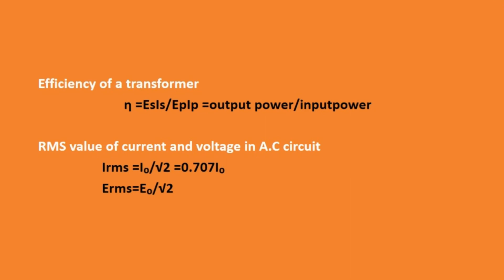Next is efficiency of a transformer, represented by eta: eta equal to Es·Is by Ep·Ip, that is output power by input power. Next is the RMS value of current and voltage in an AC circuit. The RMS value of current is I-naught by root 2, which equals 0.707·I-naught, where I-naught is the peak current. The RMS voltage is E-naught by root 2.